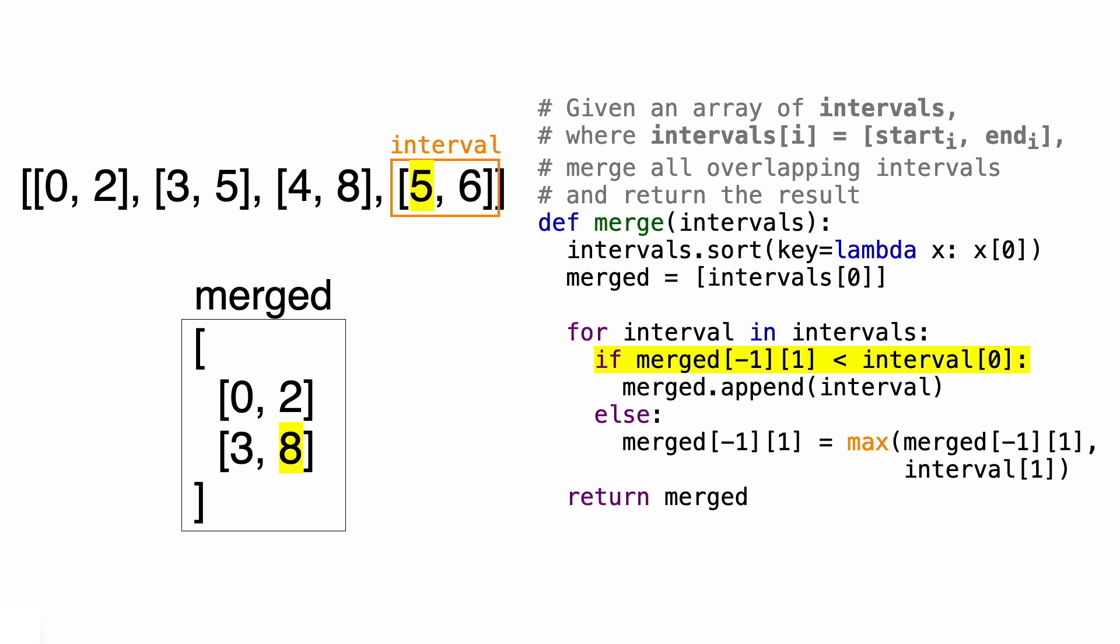Finally, 8 is greater than 5, so this is another overlap. Let's compare the ending values. 8 is greater than 6, so the ending value of our first interval stays at 8. And that's all the intervals in the list. All that's left to do is return merged, and we're done.